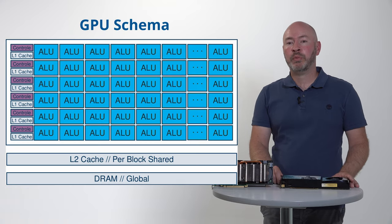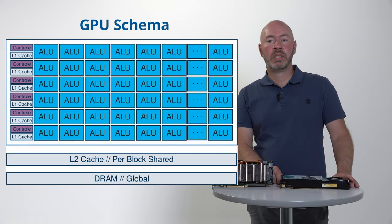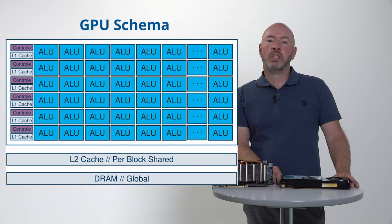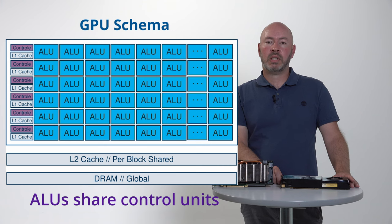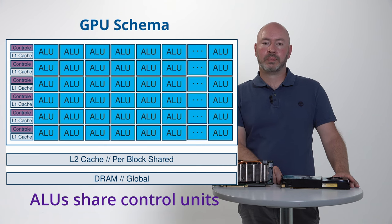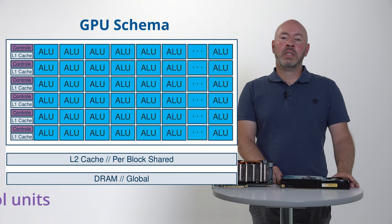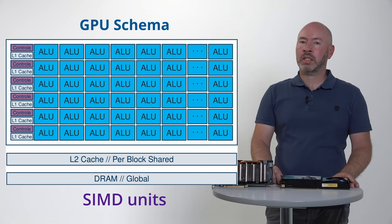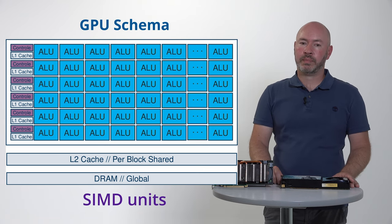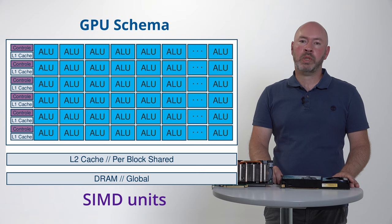In contrast, the GPU is built upon several sets of ALUs, which share a single basic control unit and an L1 cache. These units are single instruction multiple data, or SIMD, units. NVIDIA calls them streaming multiprocessors.